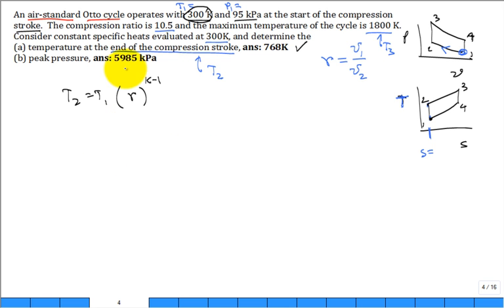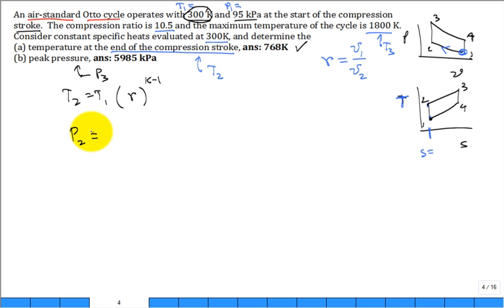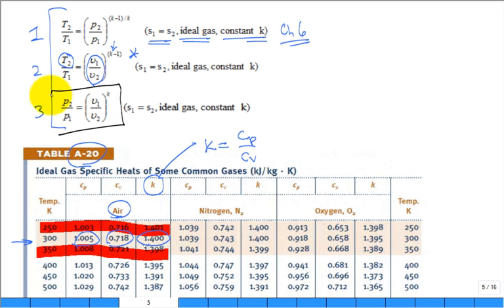What about the peak pressure? From the PV diagram, the peak pressure is at state three — P3. Some people mistakenly calculate P2 and call it the peak pressure. To find P3, you first calculate P2, then use that to calculate P3. Here's another isentropic relationship we'll use for the Otto and diesel cycles.